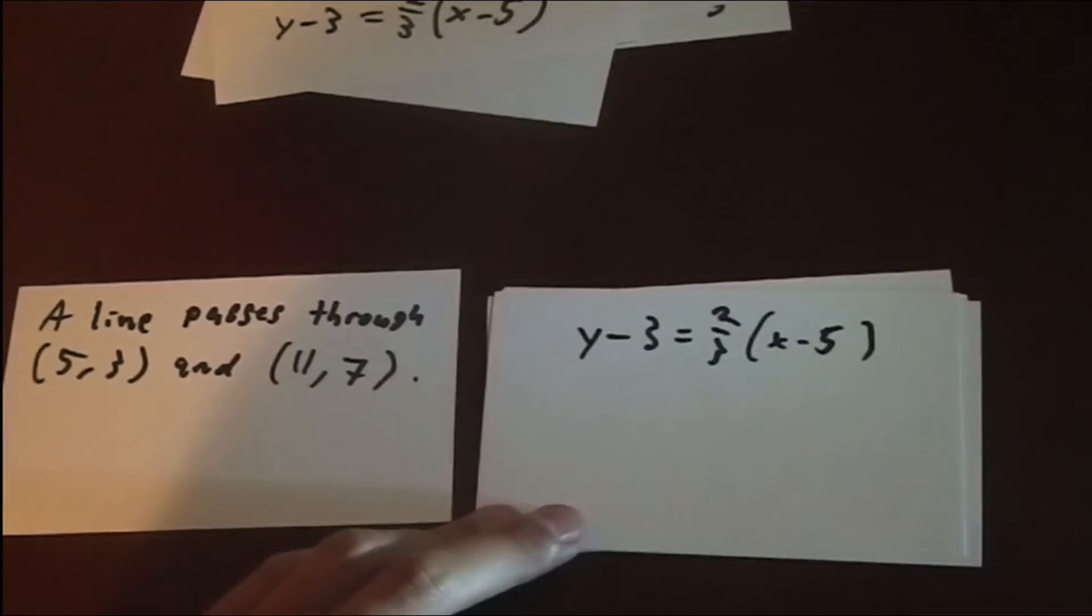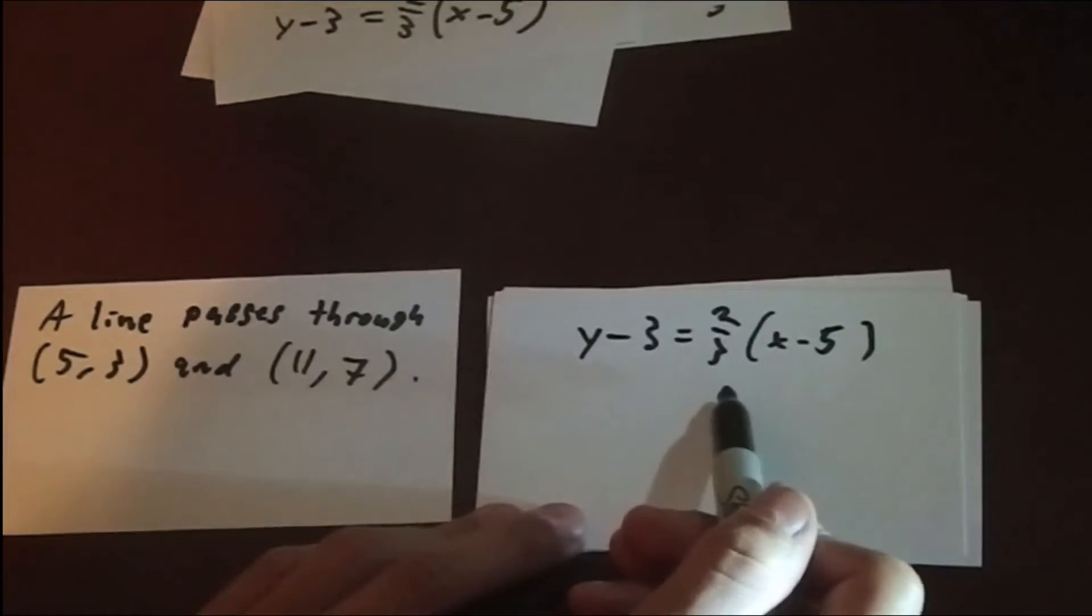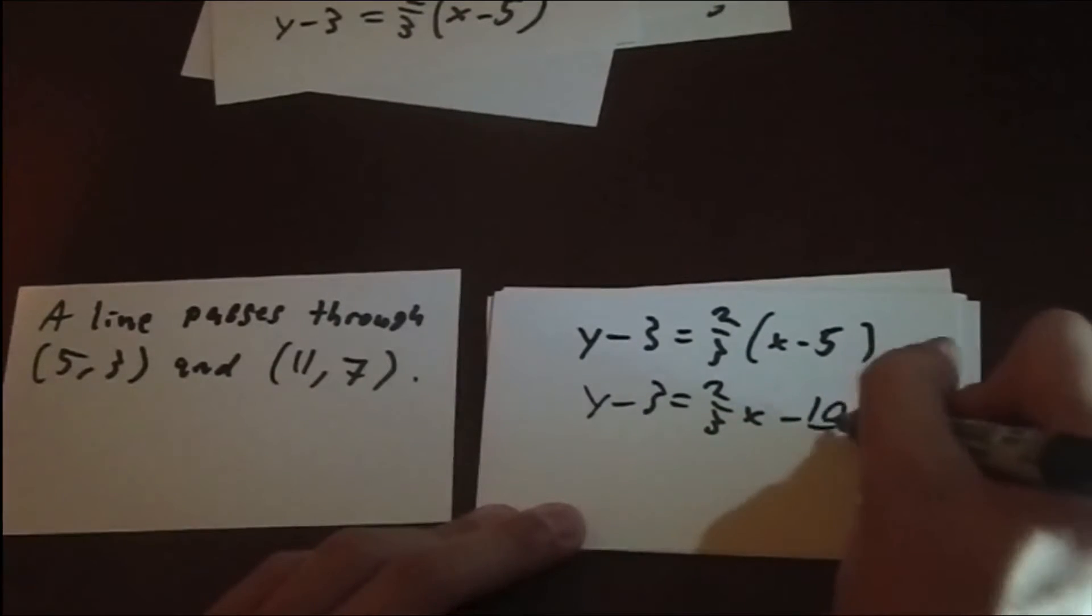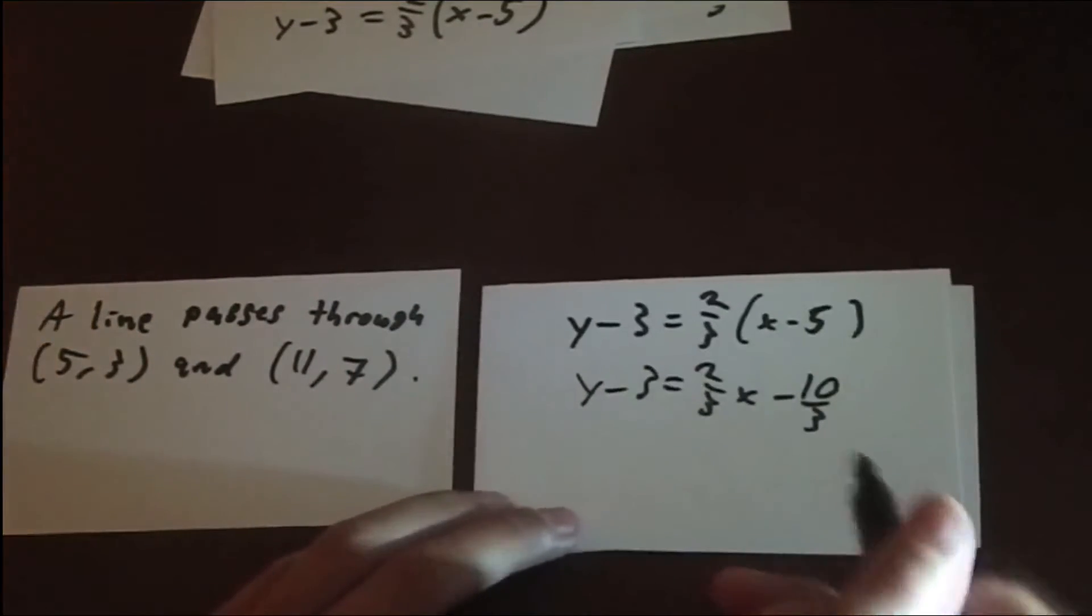Our first step is we're going to distribute those two-thirds. So, y minus 3 equals 2 thirds x minus 10 thirds. I'm keeping it in an improper fraction just for convenience.